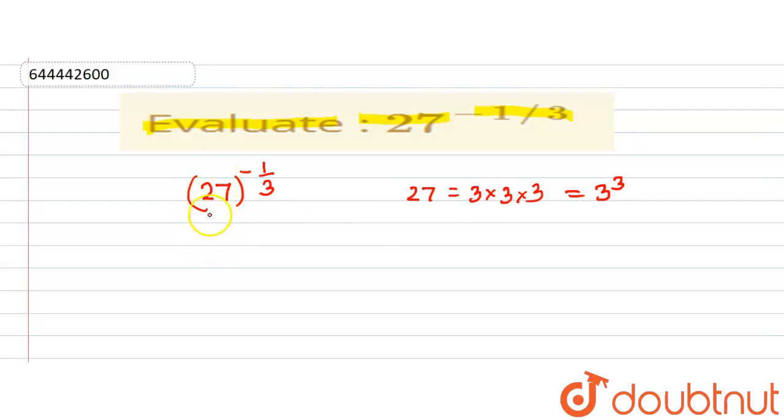here. So here 27 can be written as 3 to the power of 3, and whole to the power of minus 1 by 3.